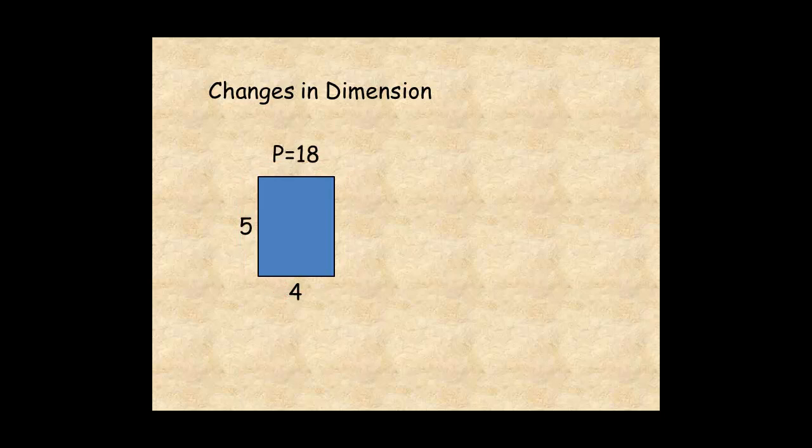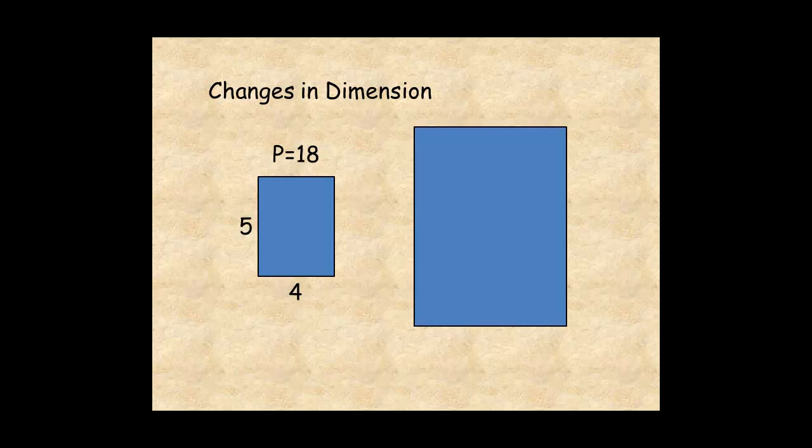Here's another rectangle with dimensions 2 times as large. Its perimeter is 36 units. Notice that multiplying the dimensions by 2 makes the perimeter 2 times as large.